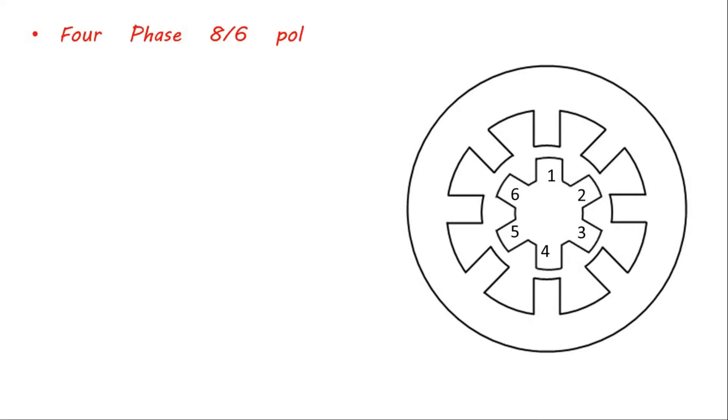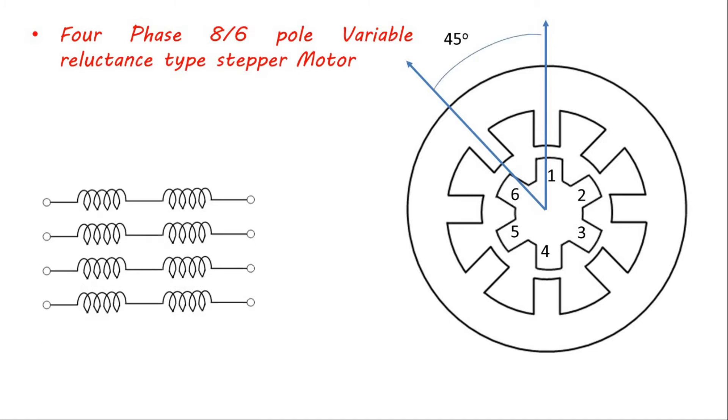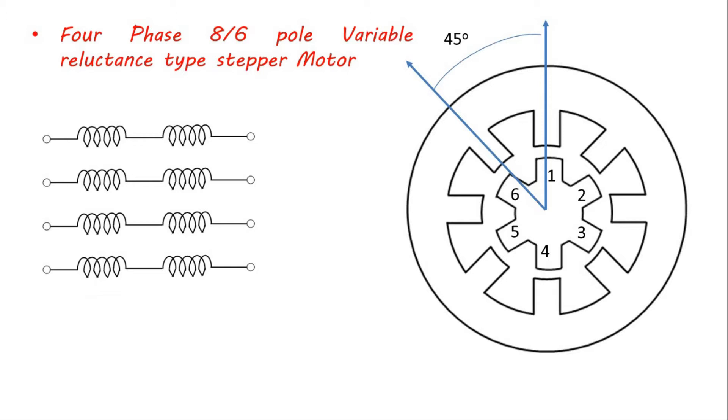This configuration is popularly known as 8 by 6 pole variable reluctance stepper motor. The 8 stator poles are shifted 45 degrees and energized with 4 pair of stator windings as shown.